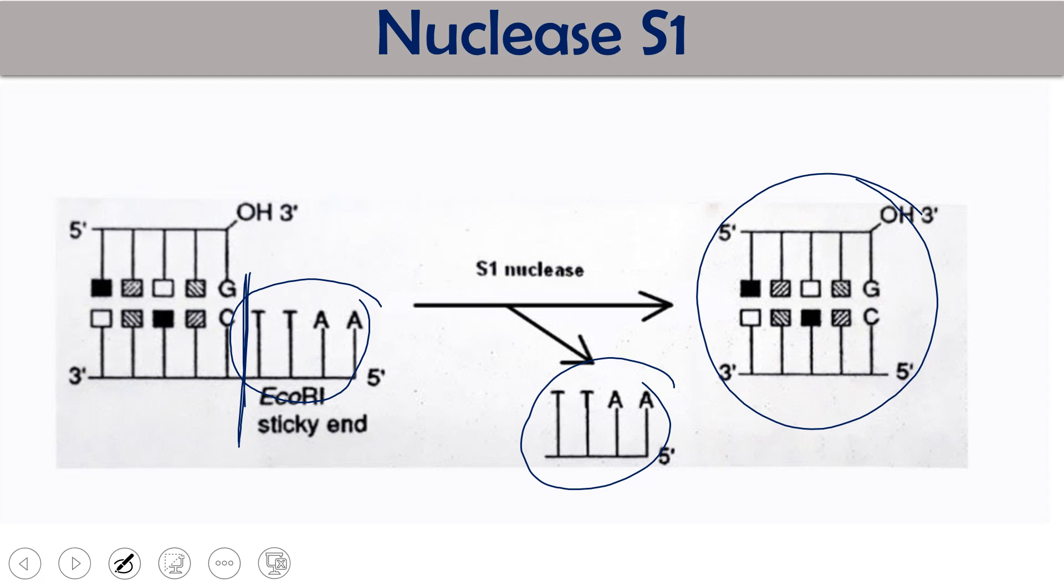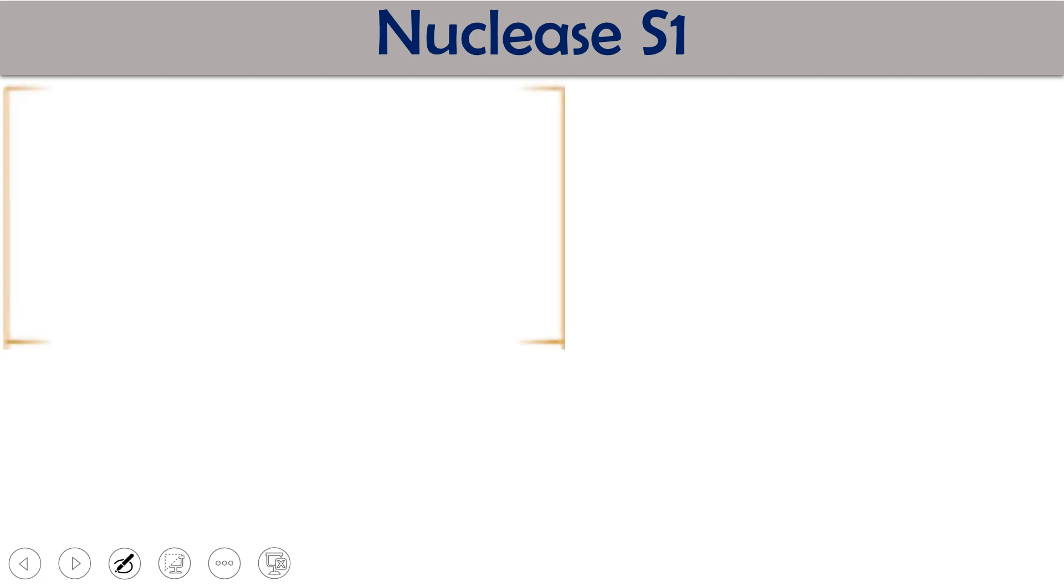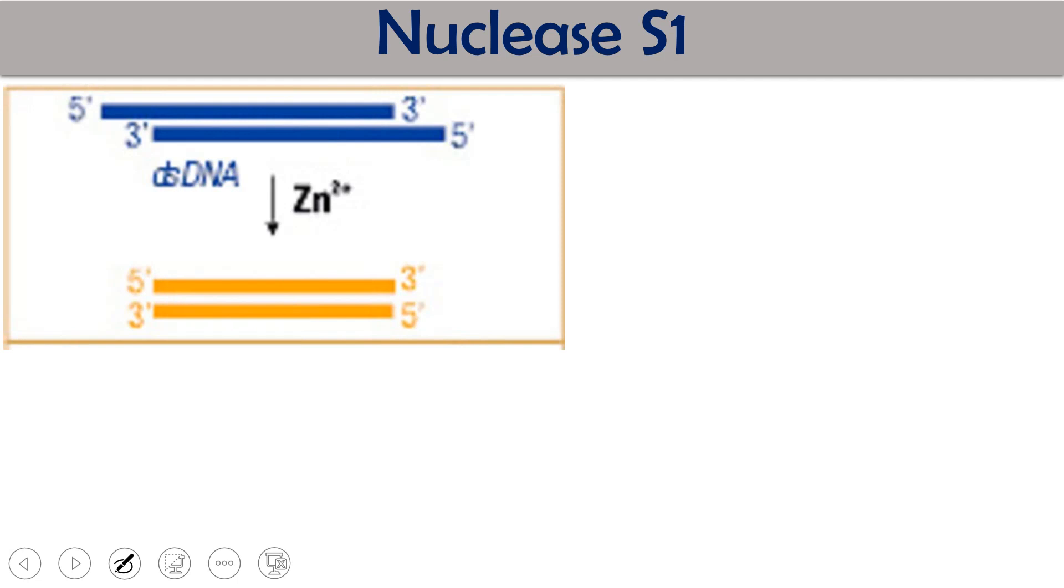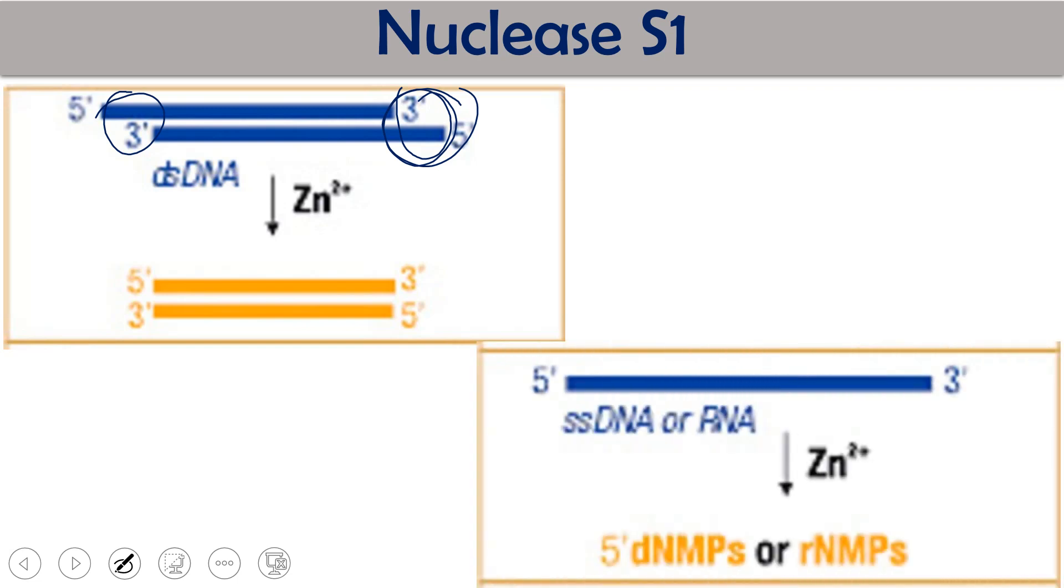Other than this, if you see this is the double-stranded DNA which is having both sides with protruded ends. This Nuclease S1 walks on this DNA and removes this fragment as well as this fragment from both sides. Ultimately we will have a blunt-ended DNA. Single-stranded region has been removed by this Nuclease S1.